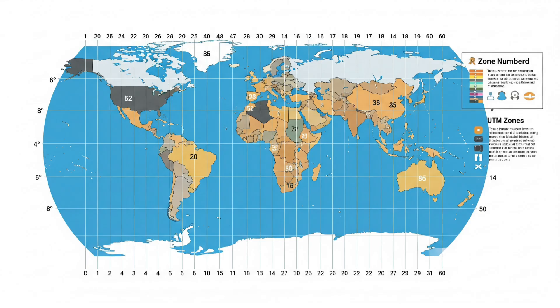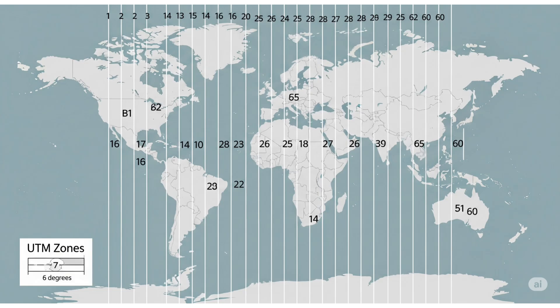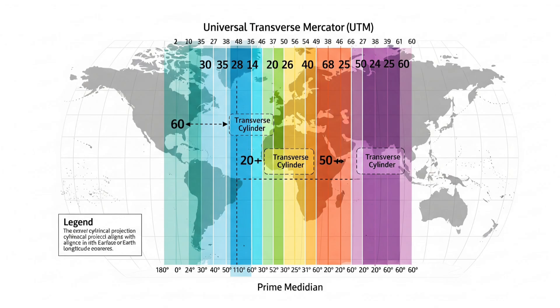It's based on the transverse Mercator projection, which means the cylinder used for projection is wrapped around the Earth vertically, not horizontally like the regular Mercator. Each zone gives a relatively accurate representation of a small part of the Earth, making it excellent for local and regional mapping.